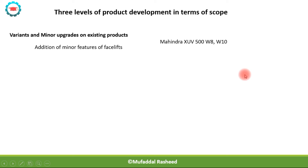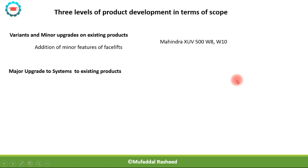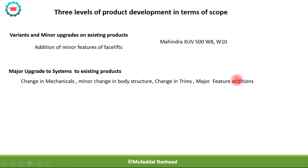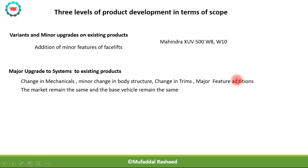The other type is called a major upgrade. When there are major upgrades to the mechanicals, to the body structure, to the trims, and there are major feature additions — we have to keep in mind that this is for existing products in which the market remains the same and the base vehicle remains the same. These are major upgrades to existing vehicles.